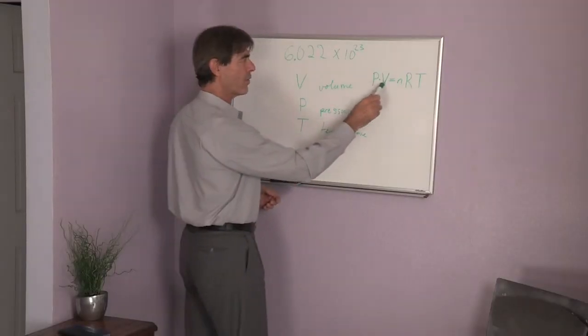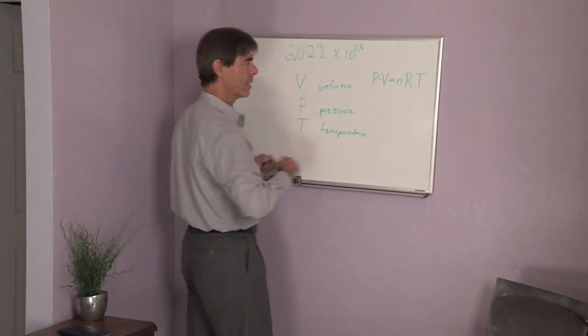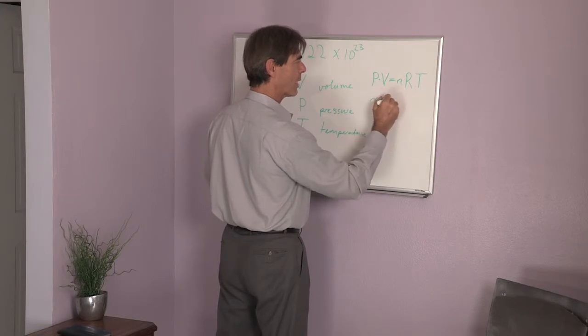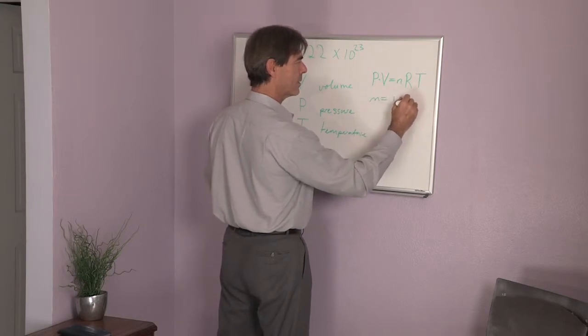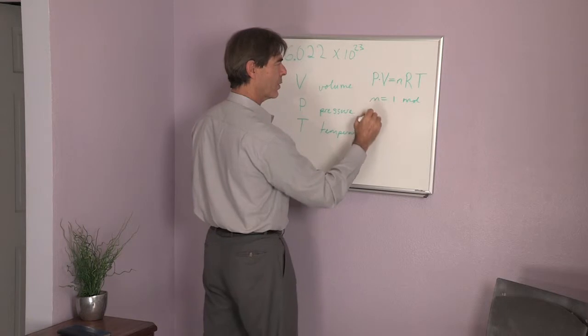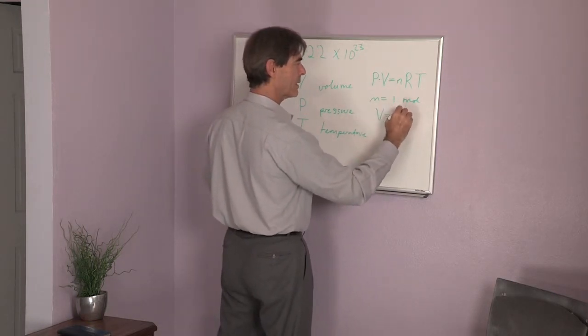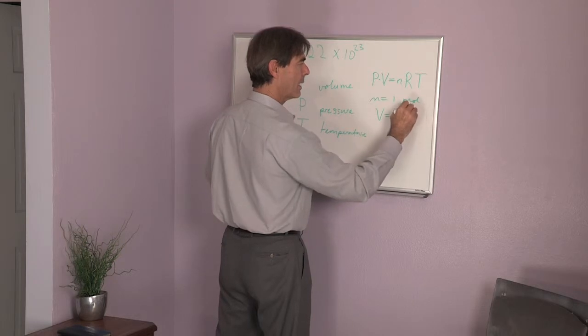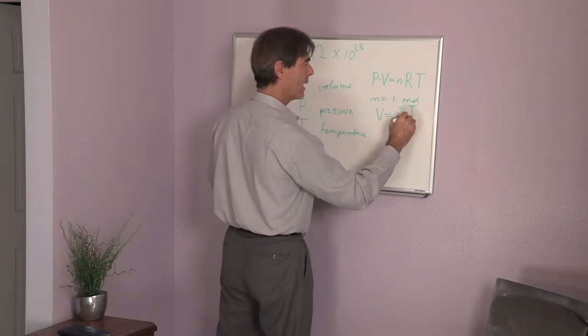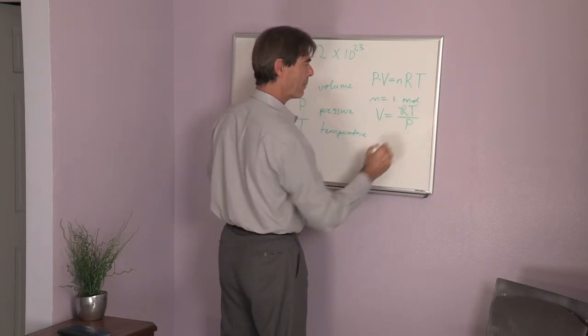If you want to know the volume with one mole, n equals one, so now the volume is equal to this number R multiplied by T and dividing that by pressure.